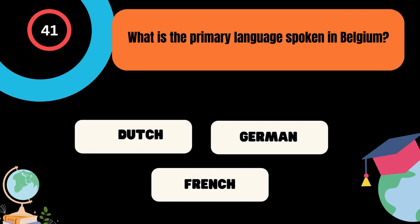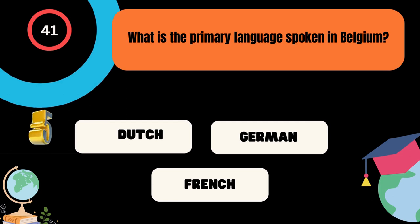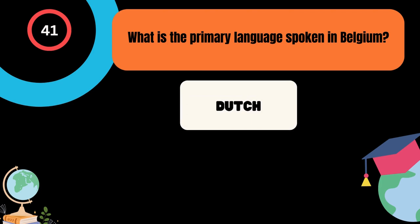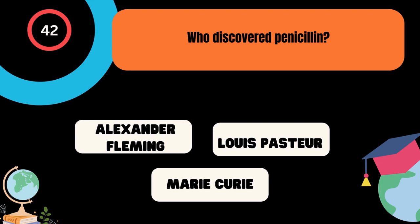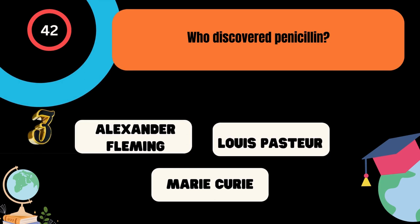What is the primary language spoken in Belgium? A. Dutch, B. German, C. French. And the correct answer is Dutch. Who discovered penicillin? A. Alexander Fleming, B. Louis Pasteur, C. Marie Curie. And the correct answer is Alexander Fleming.